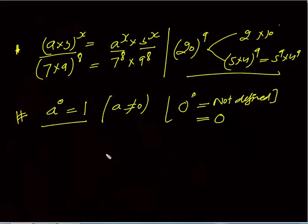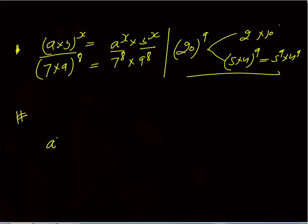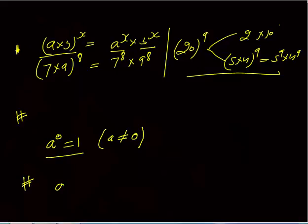Next: A raised to the power 0 is equal to 1, but there is a condition — A should not be equal to 0, because 0 power 0 would be 0, not 1. Now, if I write A power X, raised to the power Y, this means A raised to the power X into Y. Whenever you open the bracket, the powers get multiplied.